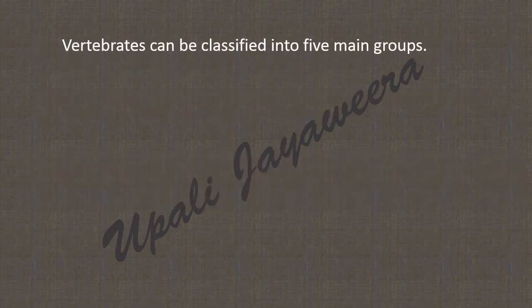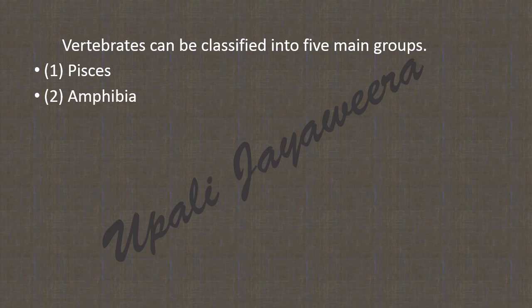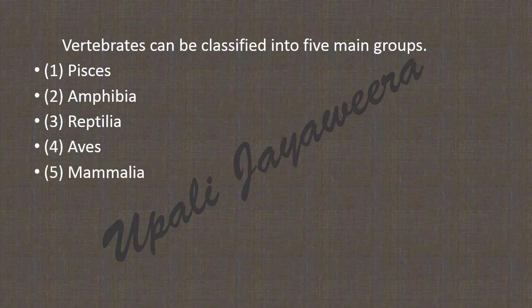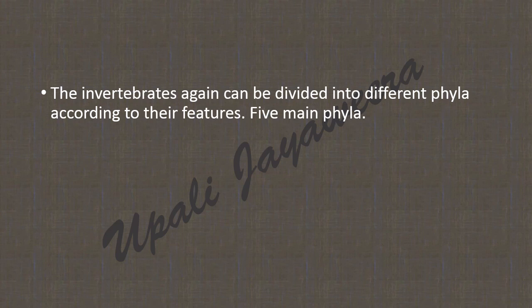Vertebrates can be classified into five main groups. Invertebrates can also be divided into different phyla according to their features, and there are five main phyla.